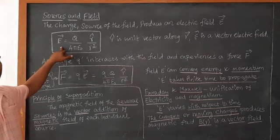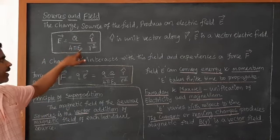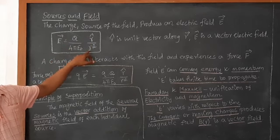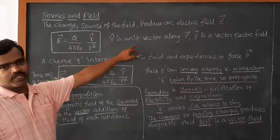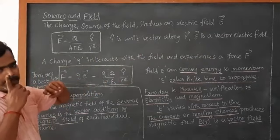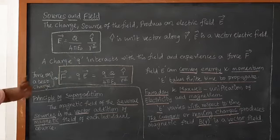So we can write the electric field in the vector, E is equal to capital Q divided by 4 pi epsilon into R cap divided by R square. So the Q is the charge. R cap is the unit vector along the direction of R. And R is the distance.